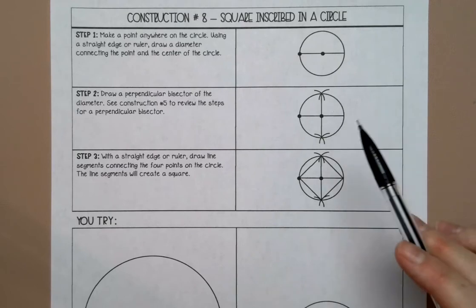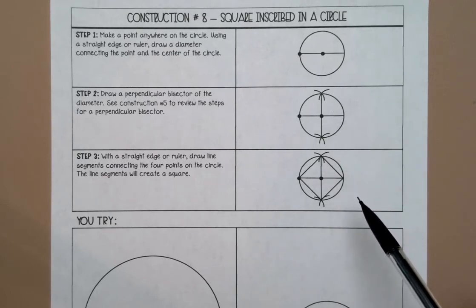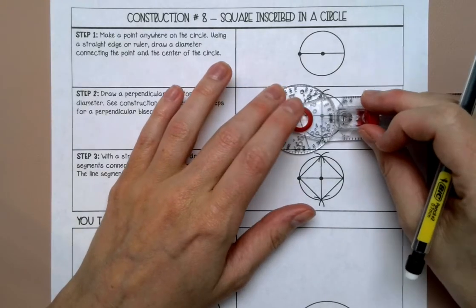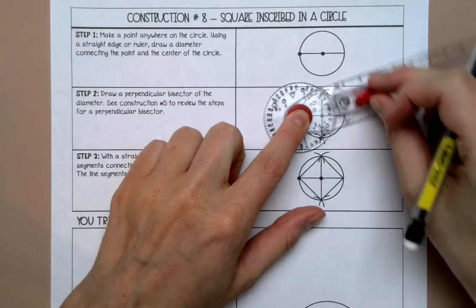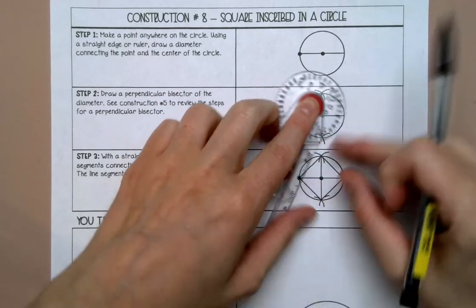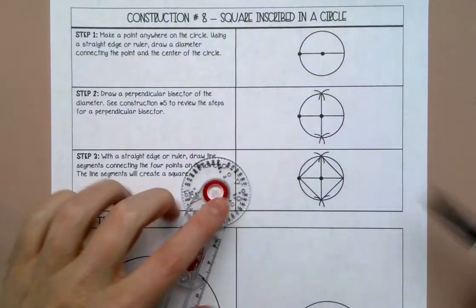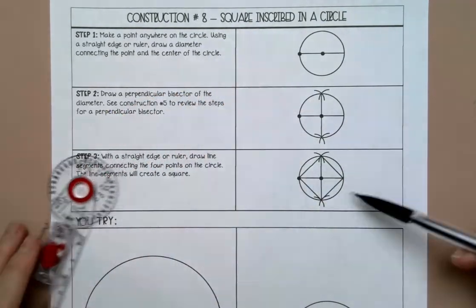Then we're going to construct a perpendicular bisector using that diameter. So remember, you extend your compass a little over halfway, go up and down, then go to the other side, up, down, and then we're going to connect them and then we're going to make a square.